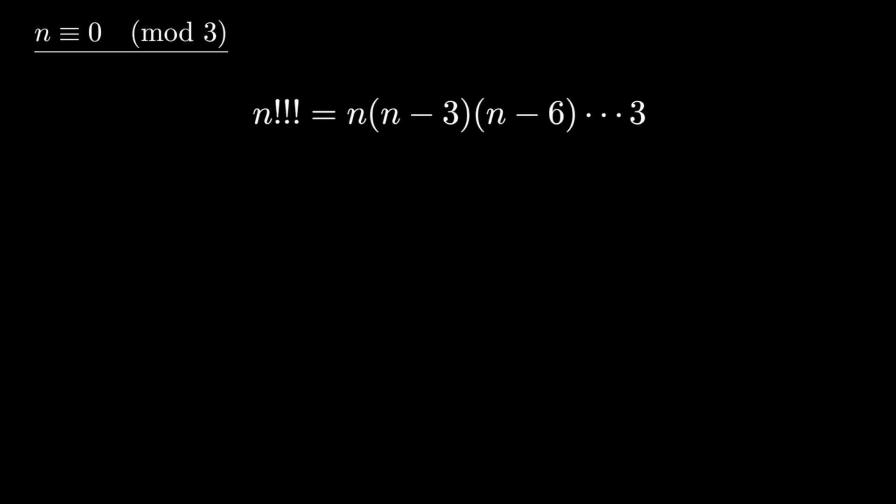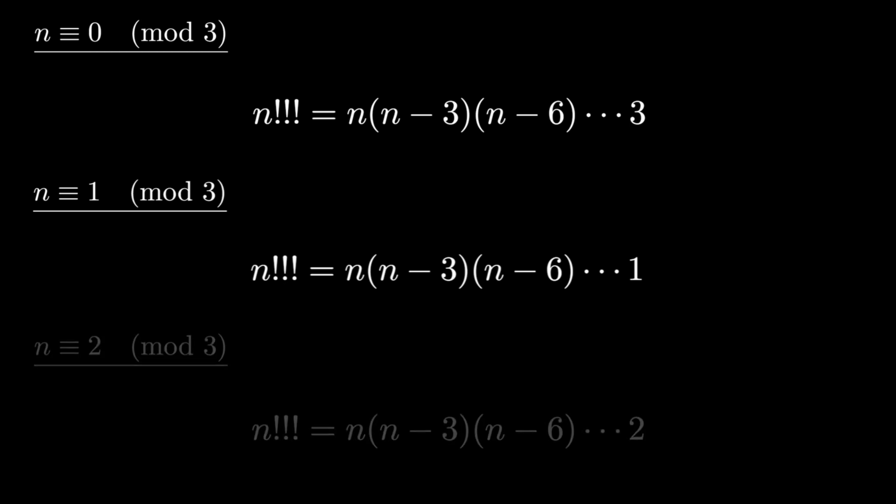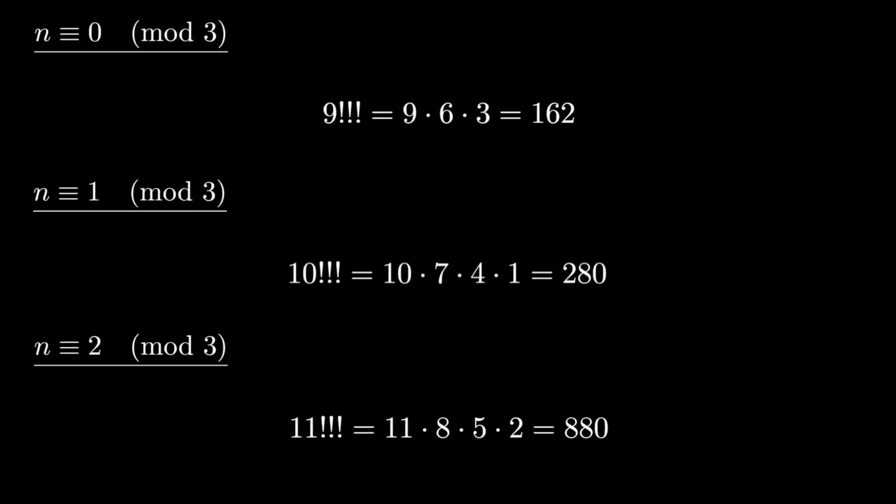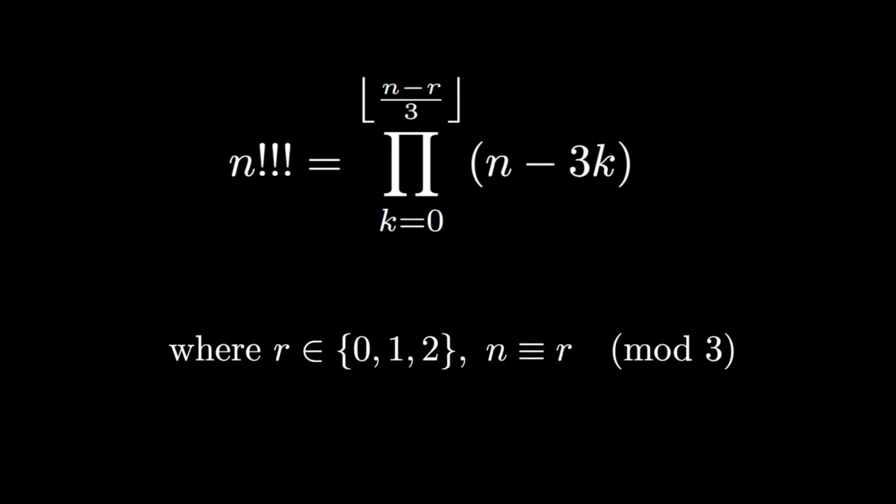The triple factorial multiplies terms decreasing by 3. If n is congruent to 0 mod 3, the product ends at 3. If n is congruent to 1 mod 3, the product ends at 1. If n is congruent to 2 mod 3, the product ends at 2. We can write the triple factorial using product notation where n is congruent to r mod 3.